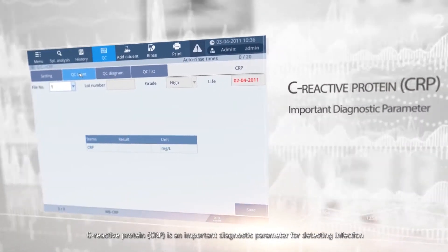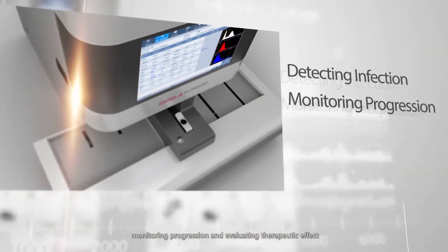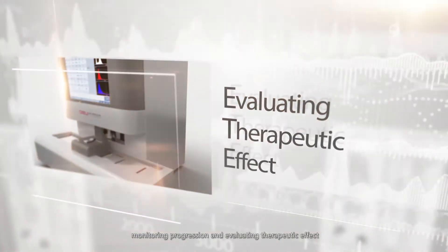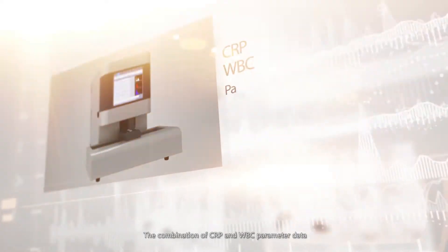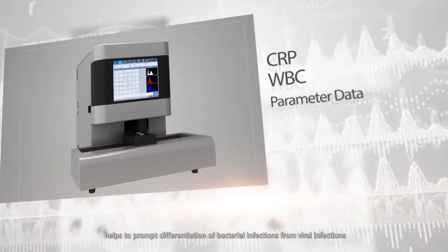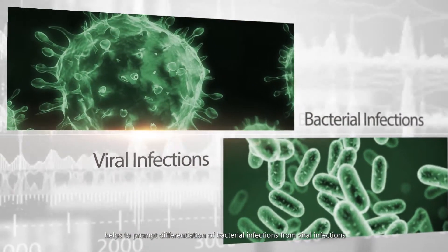C-reactive protein is an important diagnostic parameter for detecting infection, monitoring progression, and evaluating therapeutic effect. The combination of CRP and WBC parameter data helps to prompt differentiation of bacterial infections from viral infections.